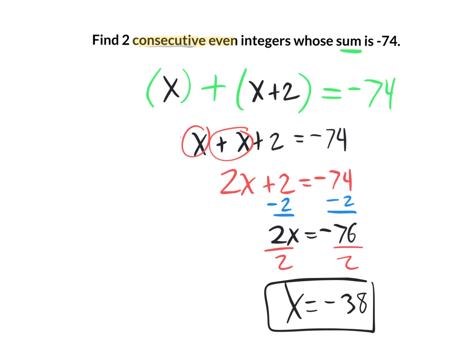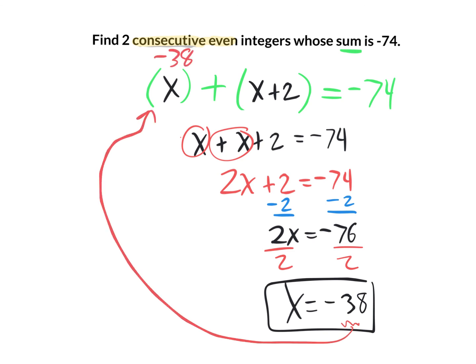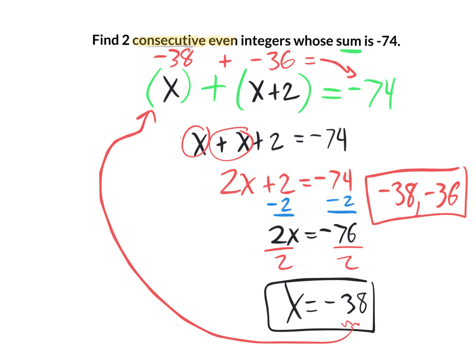Divide both sides by 2 and you get x equals negative 38. So the first number is negative 38. The next consecutive even number is not negative 40 — it's negative 36, because negative 38 plus 2 equals negative 36. These are the two consecutive even integers whose sum is negative 74. Check: negative 38 plus negative 36 equals negative 74. Type your answer as negative 38, negative 36. Good luck on the practice quiz — it's going to be almost identical to the actual quiz the next day.